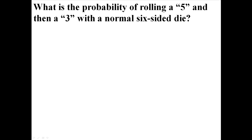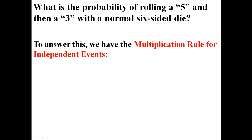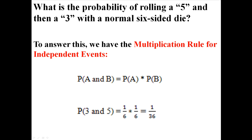What is the probability of rolling a 5 and then a 3 with a normal 6-sided die? To answer this question, we have the multiplication rule for independent events: the probability of both A and B occurring is the probability of A times the probability of B. So the probability of getting a 3 and then a 5 is 1 out of 6 times 1 out of 6, giving us 1 out of 36.